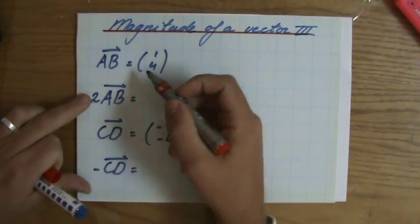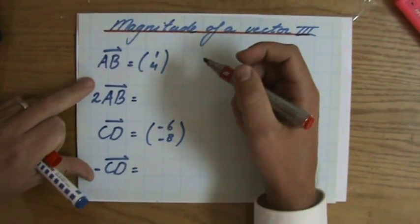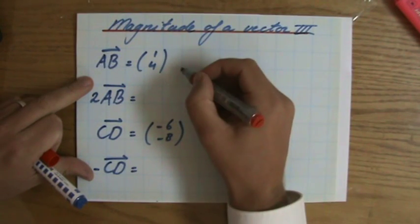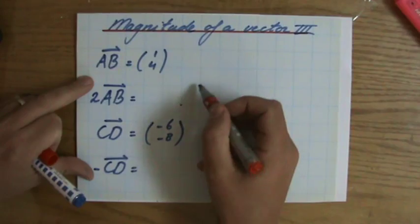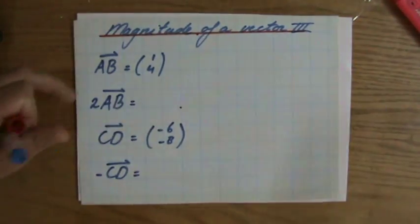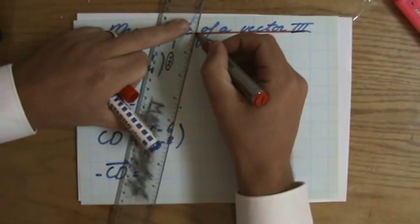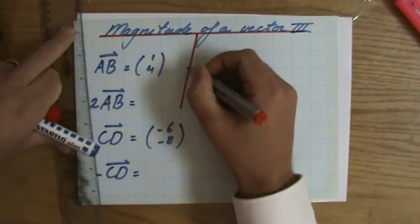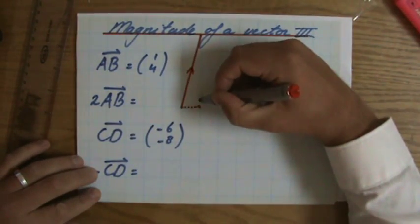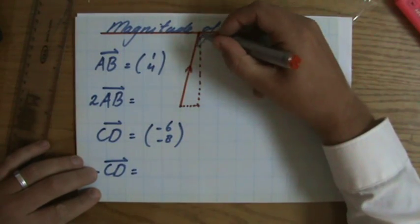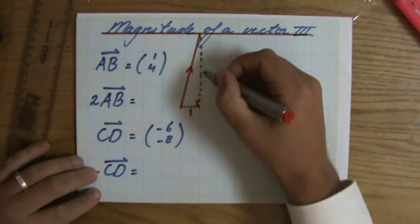Now AB (1, 4), if I would sketch it, for instance, if I start here, so it's 1, 2, 3, 4, so the vector AB goes like this. And I can turn it quickly into a right-angled triangle, where this is 1 and that is 4.